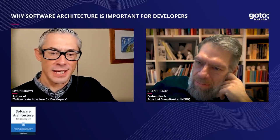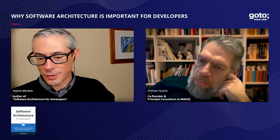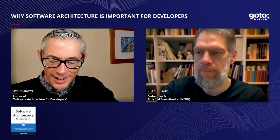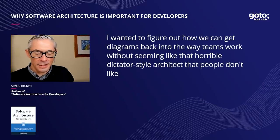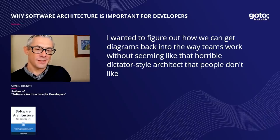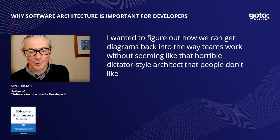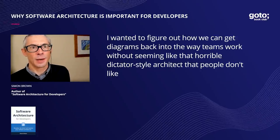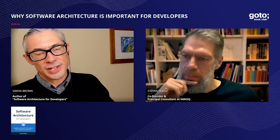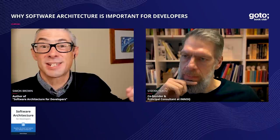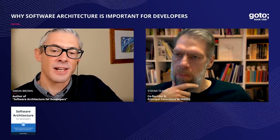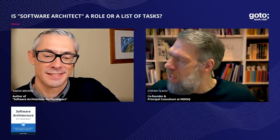When the Agile Manifesto came around in the early 2000s, lots of people jumped on it — which is great, and there's a lot of benefit from the Agile movement. However, a lot of people started dropping the more design-focused, documentation-focused, and architecture-focused techniques and practices. I wanted to figure out how to get this stuff back into the way that teams work without seeming like that horrible dictator-style architect. I also wanted to reintroduce existing ways of working with a developer focus, so that developers potentially pay more attention to them.